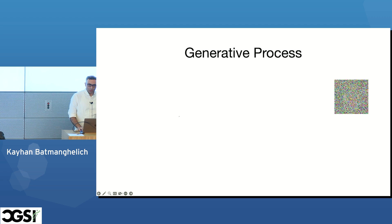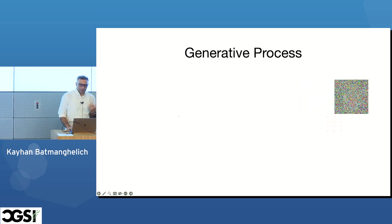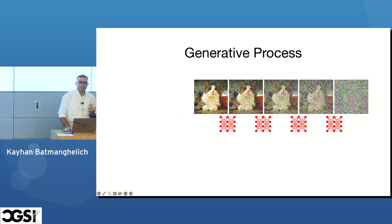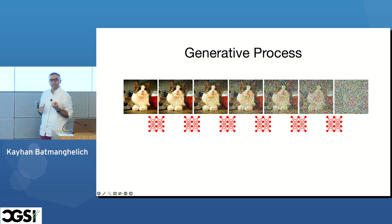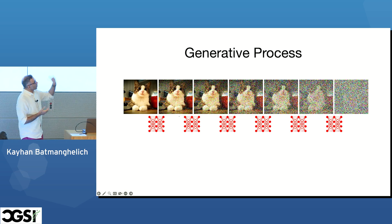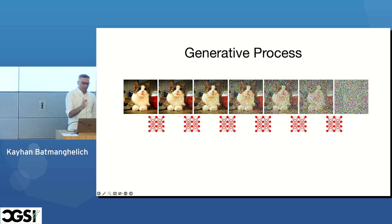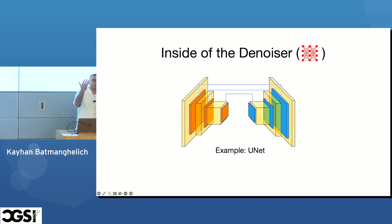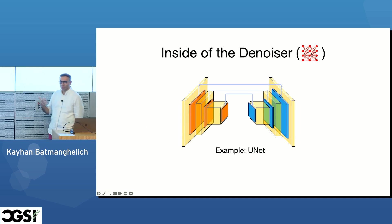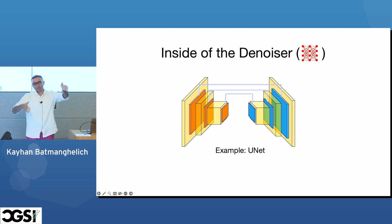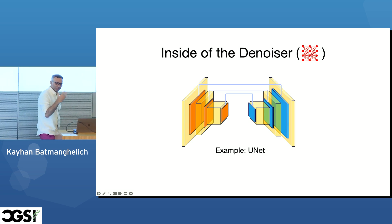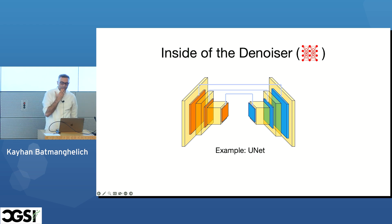Why does this matter? If you manage to create such a denoiser, you can start from complete noise and repeat the denoising process many times until you arrive at a complete, clean result. A generative model can effectively be viewed as a concatenation of many steps of this denoising procedure. Inside the neural network, one common architecture is UNET — convolutions followed by deconvolutions that increase resolution, plus skip connections.